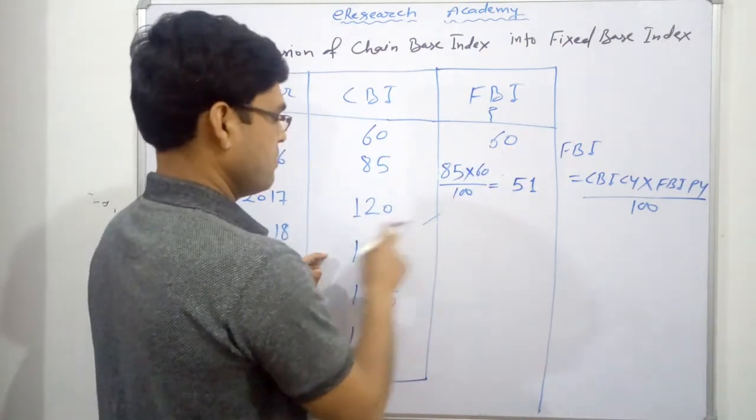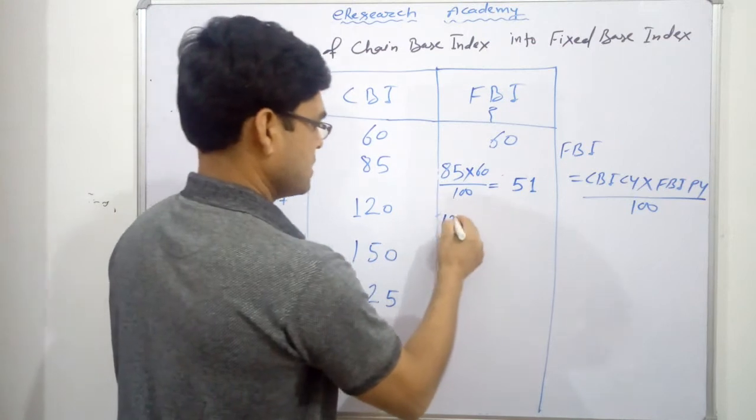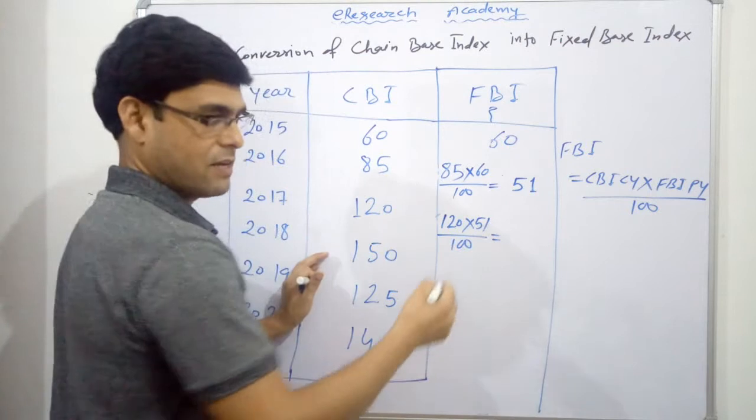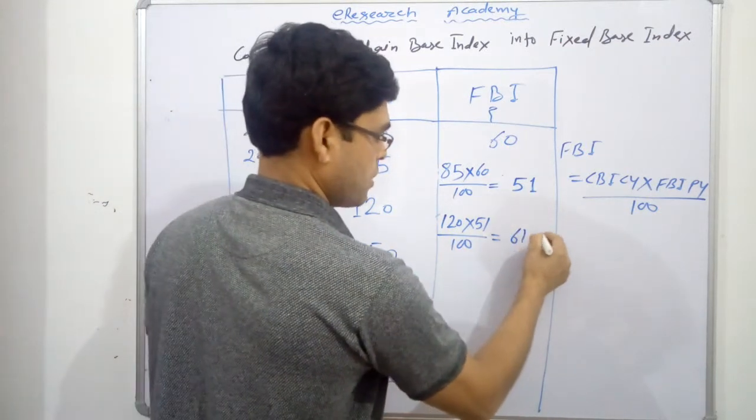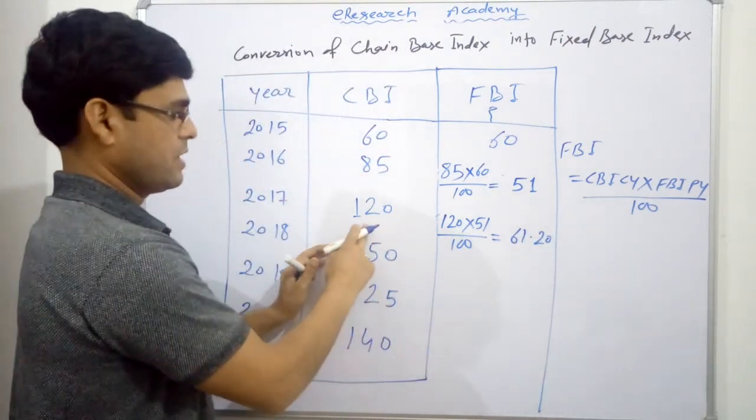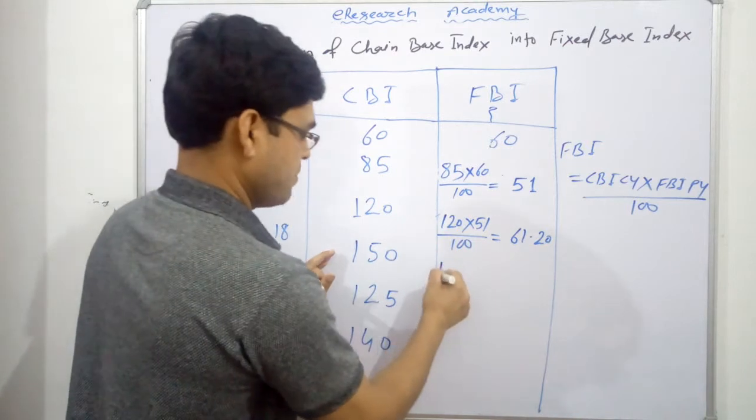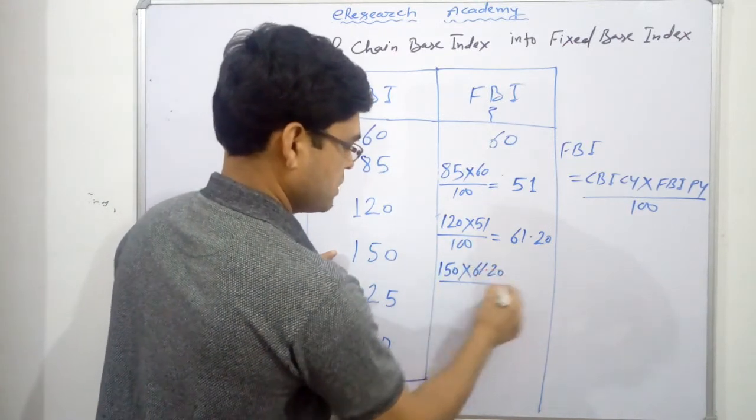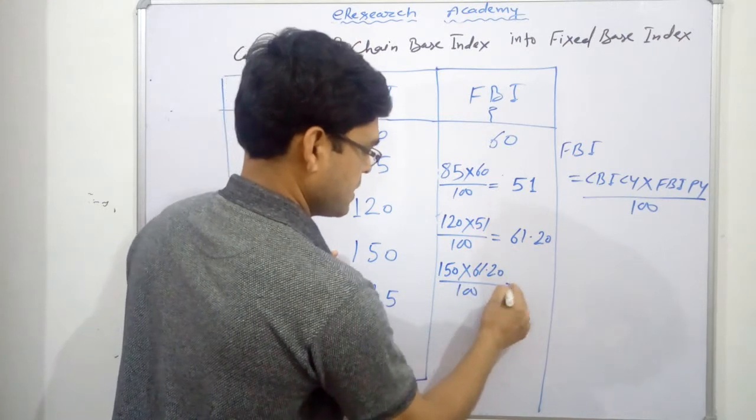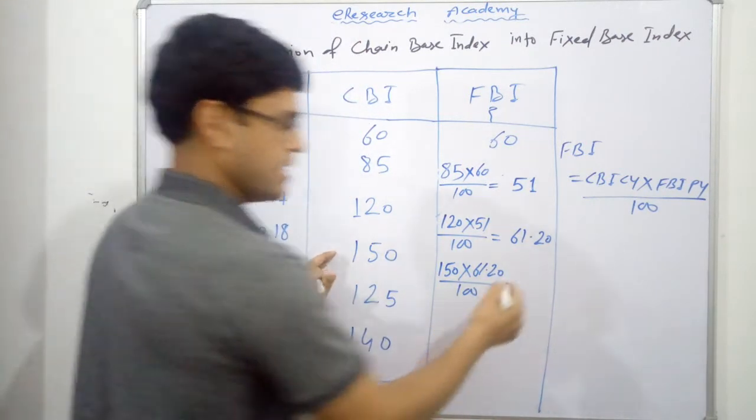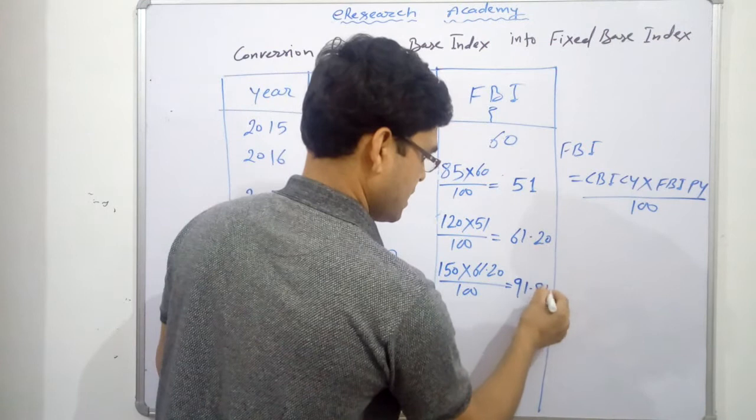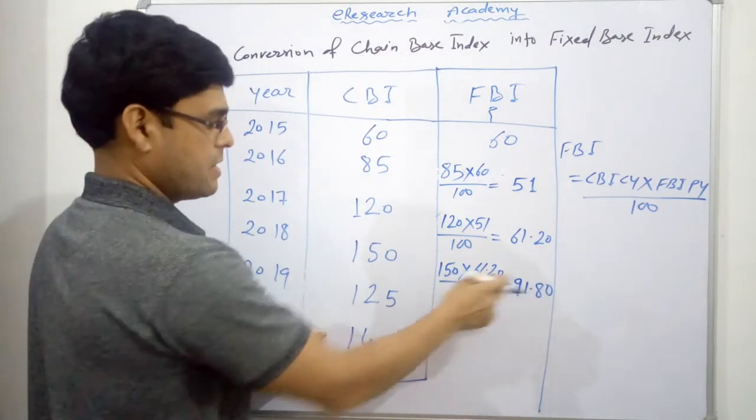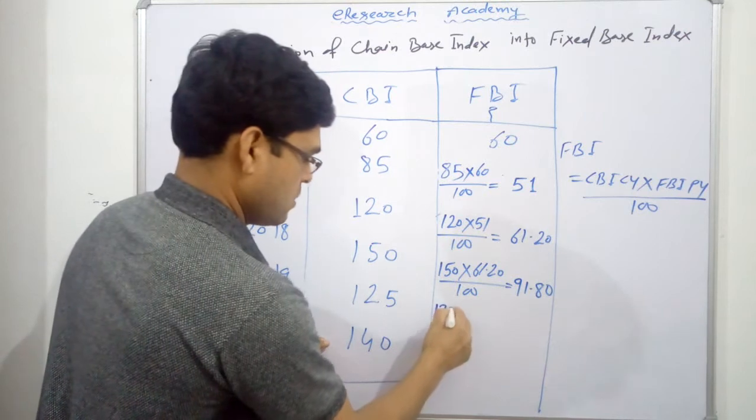Then 51 will be multiplied by next year's chain base 120, over 100. This will give us 61.20. For next year, it will be 150 into 61.20 by 100. This will give us 91.80.